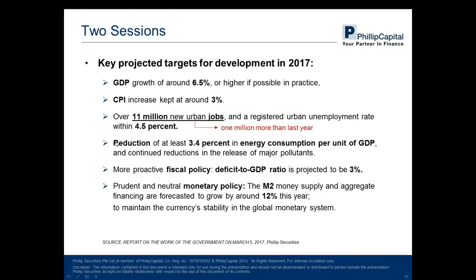The reduction in energy consumption means the government will focus on environmental protection this year and consistent economic development. A decrease in the debt-to-GDP ratio shows a more proactive fiscal policy, while monetary policy remains more prudent. Just as after Donald Trump won the US election, China's RMB faced high pressure of depreciation, but from the Two Sessions we know the government wants to maintain currency stability in the global market system and won't let it drop too much.